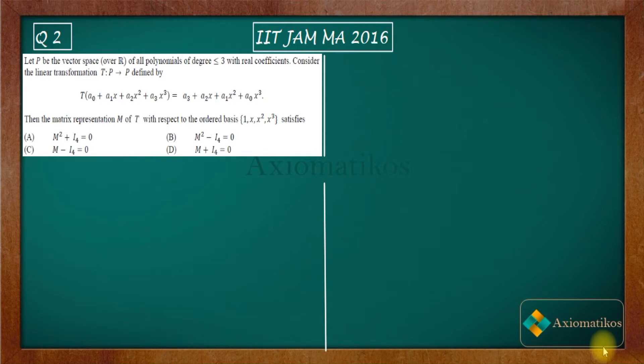Let us firstly have a look. Let P be the vector space over R of all polynomials of degree less than or equal to 3 with real coefficients. Consider the linear transformation T from P to P defined by T of (a₀ + a₁x + a₂x² + a₃x³) equals a₃ + a₂x + a₁x² + a₀x³.